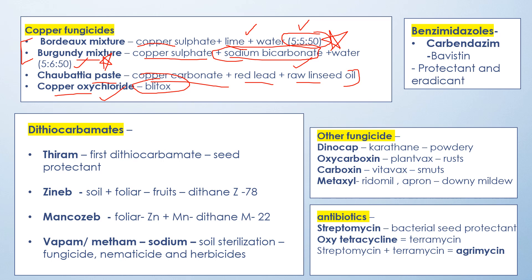The first dithiocarbamate is Thiram, which is a seed protectant — we use it on the seed. Then there is Zineb, which is both a soil and foliar fungicide.